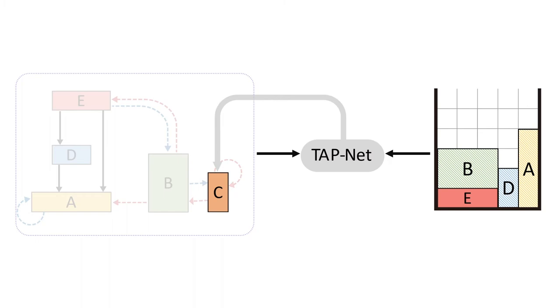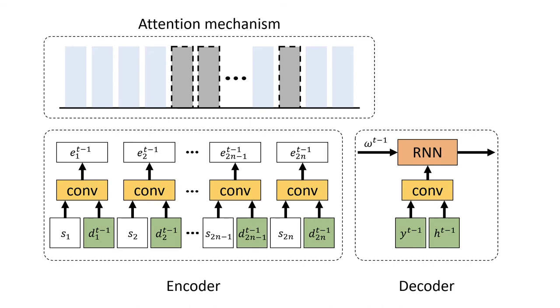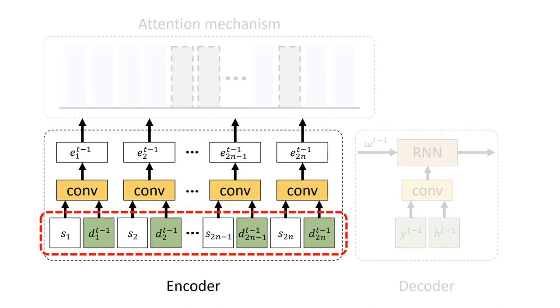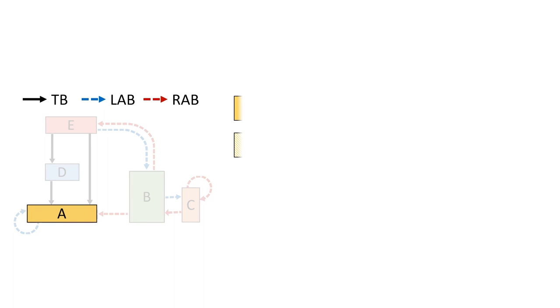In more details, TAP-Net consists of an encoder, a decoder, and an attention mechanism. The encoder encodes both the static geometry of the input objects and the dynamic dependency information from the precedence graph. Note that under 2D, each box has two different states, original and rotated orientations. We encode each state using width and height, and precedence information using binary codes.